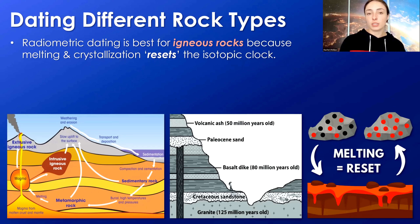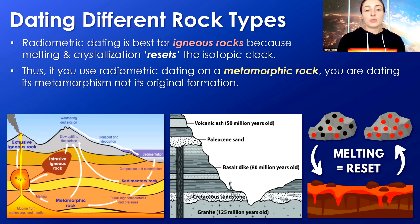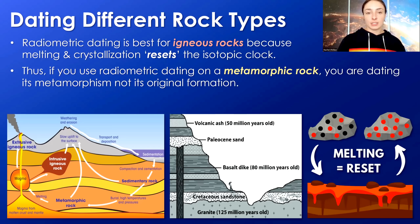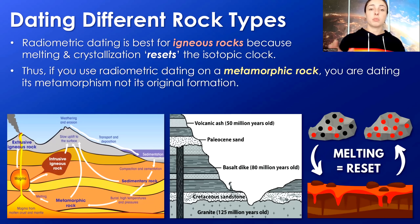Radiometric dating works best with igneous rocks, because melting and crystallization tends to reset the isotopic clock. If you try to radiometrically date metamorphic rocks — which have undergone major high-pressure, high-temperature alteration, but not full melting — that alteration also tends to reset the isotopic clock. Therefore, if you try to date metamorphic rocks, you're actually dating the time of metamorphism or alteration rather than the original rock's formation before metamorphism.